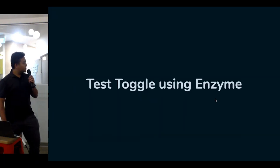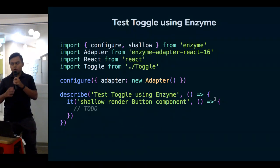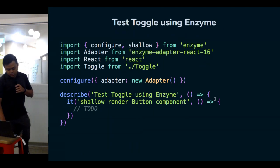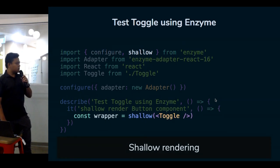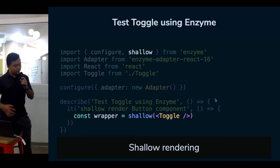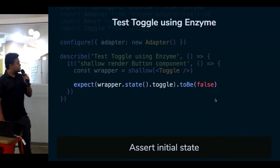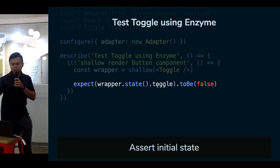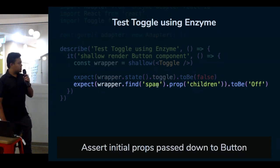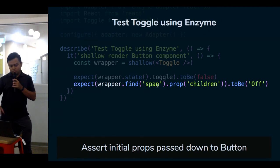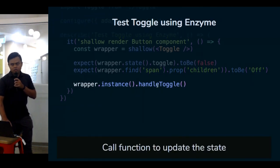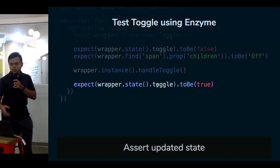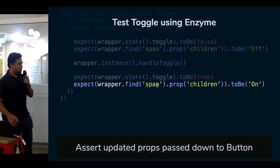We also have a button that triggers the toggle on click. Now let's test this using Enzyme — one of the most popular testing libraries. First, we render the toggle using shallow rendering, which is the most popular rendering approach in Enzyme. We get the toggle state, assert it is false on first render, check that it renders 'off', then trigger the handle toggle function which makes the toggle state true and renders 'on'.